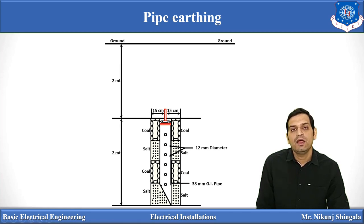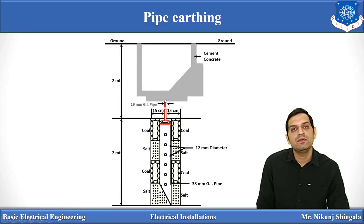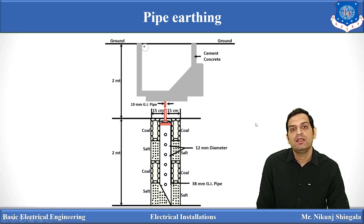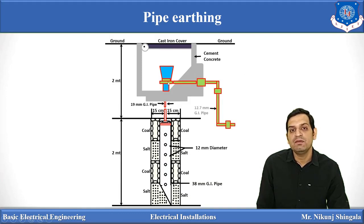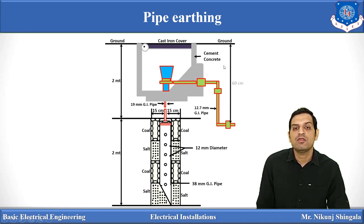Above this, cement concrete work is done, and one 90 mm GI pipe is connected with the main 30 mm GI pipe. A cast iron cover is placed over the cement concrete work for easy opening, and a funnel is provided for water pouring. A 19 mm GI pipe is also connected with a 12.7 mm GI pipe. This is the construction of the pipe earthing.